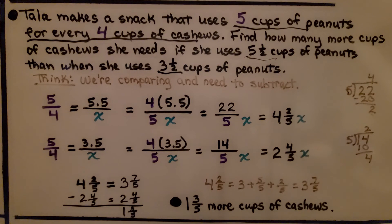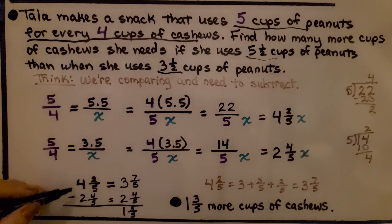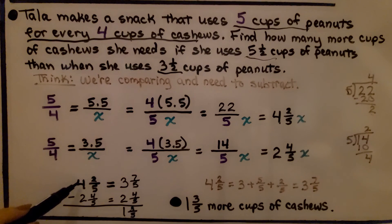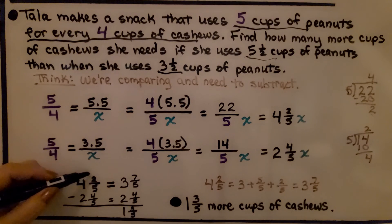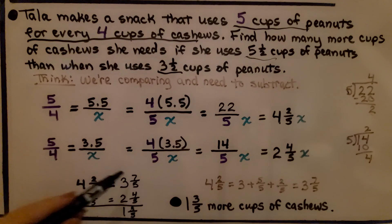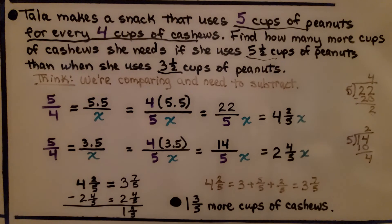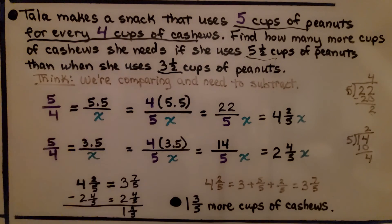Now we need to compare them, so we need to subtract. We've got 4 and 2 fifths x minus 2 and 4 fifths x. Do you remember how to subtract mixed numbers? This 4 and 2 fifths is the same thing as a 3 and a 5 fifths and a 2 fifths, so 4 and 2 fifths is equal to 3 and 7 fifths. We do 3 and 7 fifths minus the 2 and 4 fifths and get 1 and 3 fifths. We didn't have enough in the numerator here to subtract the numerator 4 here, so we needed to regroup from the 4, turn it into a 3, and give 5 fifths to this fractional part. We end up with 1 and 3 fifths more cups of cashews from when she uses 5 and a half cups of peanuts compared to when she uses 3 and a half cups of peanuts.